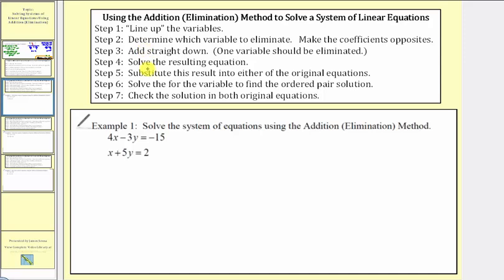Step two is the most important step: determine which variable to eliminate and make the coefficients opposites. Looking at our system, we have a four x, so if this were negative four x, the x terms would be opposites. So we can make this x term have a coefficient of negative four by multiplying both sides of the second equation by negative four. Notice if we wanted to eliminate the y terms, they do have opposite signs, but since the least common multiple of three and five is fifteen, we'd have to multiply both equations by a constant. So by eliminating the x terms, we only have to multiply one equation — but either method would work.